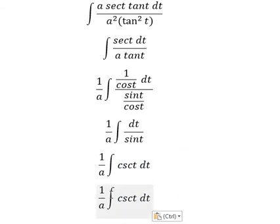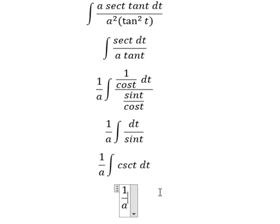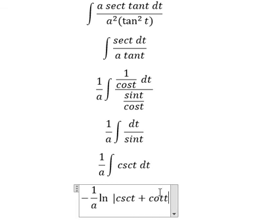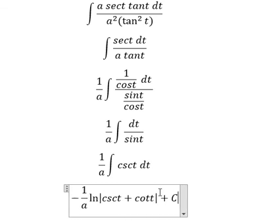The integration of this gives negative ln of the absolute value of cosecant t plus cot t, and we add c.